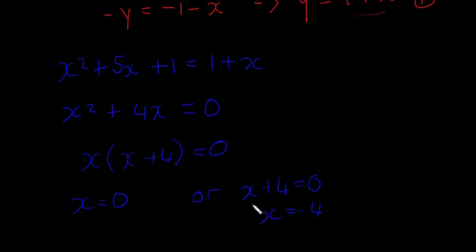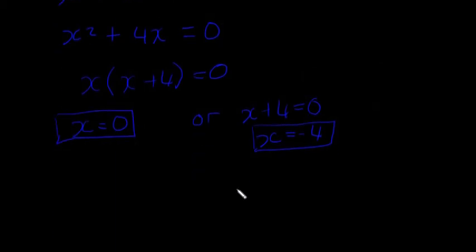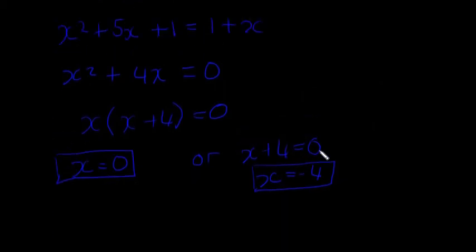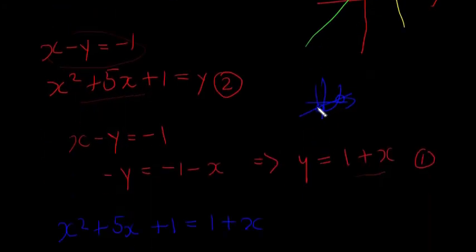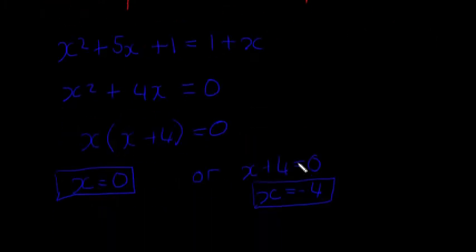So if x = 0 or x = -4, they're answers, but we also need to find the y-coordinates. Remember, we're looking for coordinates here, the two points where they cross. We're going to look at this one here, because it'll be the easiest one to find the y-coordinates. So y = 1 + x.